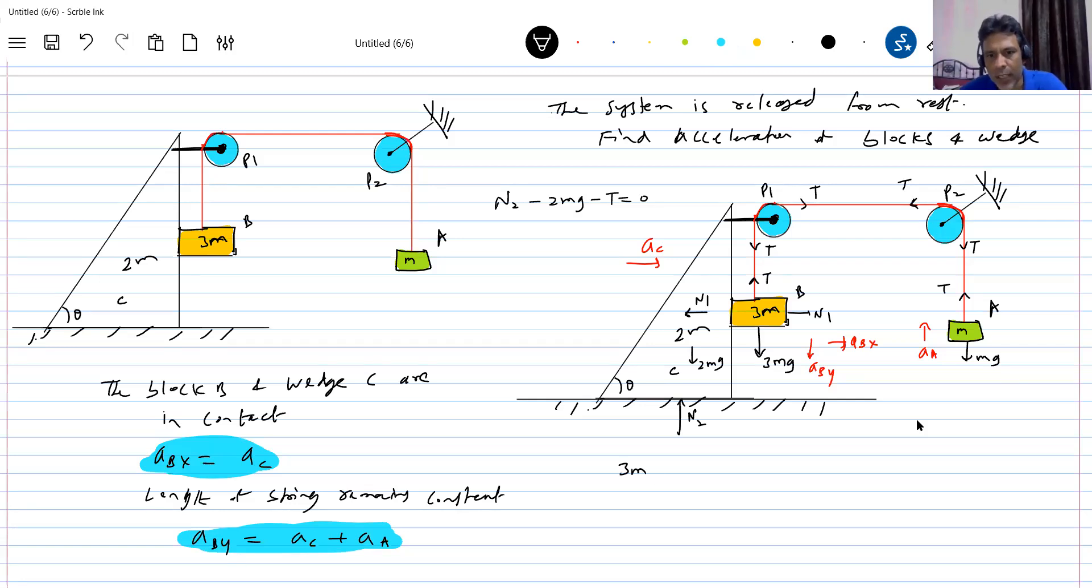So now the equation will be 3MG minus T is equal to 3M A_BY. Then N1 equal to 3M A_BX. Then on the wedge, along the x-axis, what is the forces? T minus N1 should be equal to 2M A_C. Then for the block A, T minus. So all of this will get the required. How many unknowns are there? Five unknowns, five equations. Solving this will get the required answer.